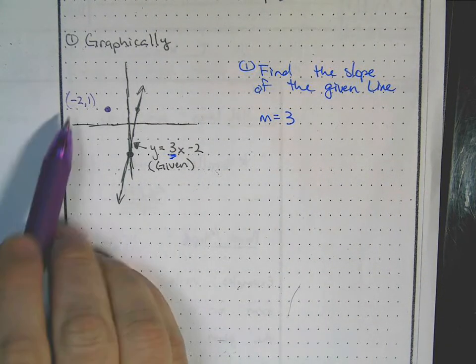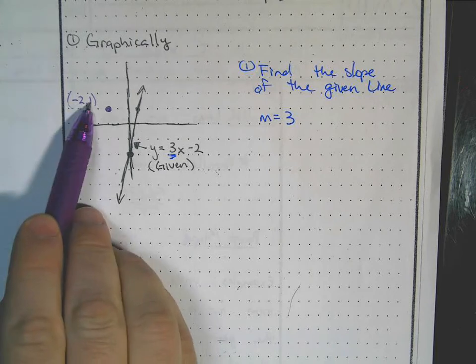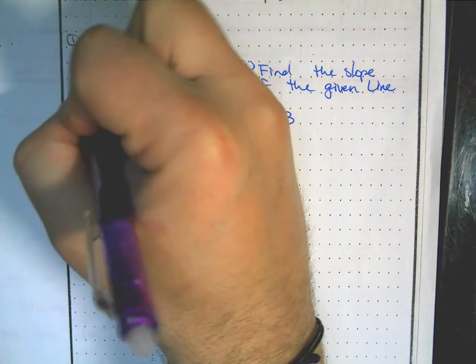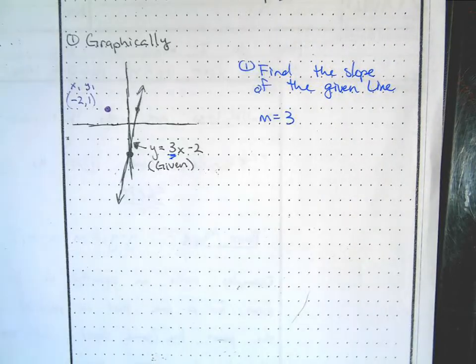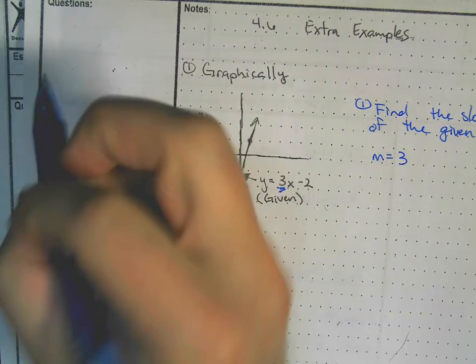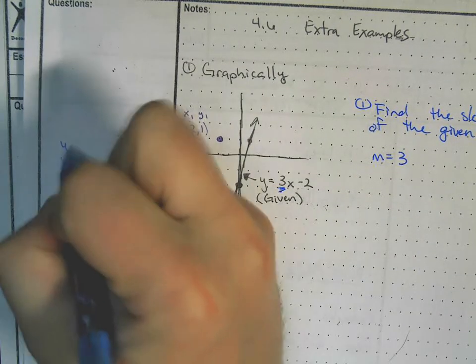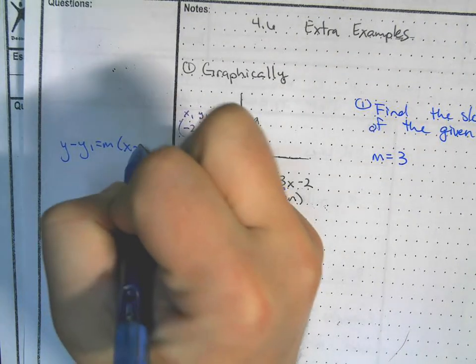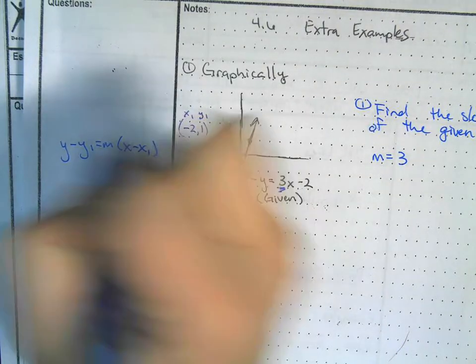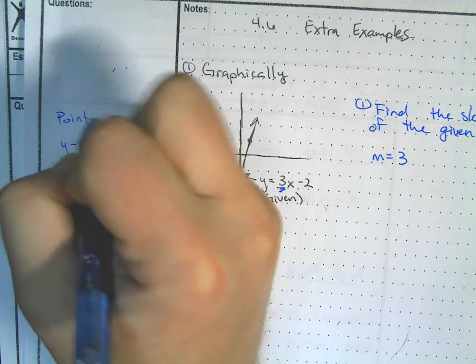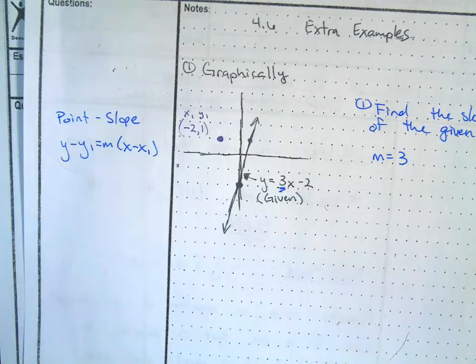Now we have our x₁ and y₁, so we're able to plug into our equation — the point-slope formula. Let's write that again: y minus y₁ equals m times (x minus x₁). That's our point-slope formula.